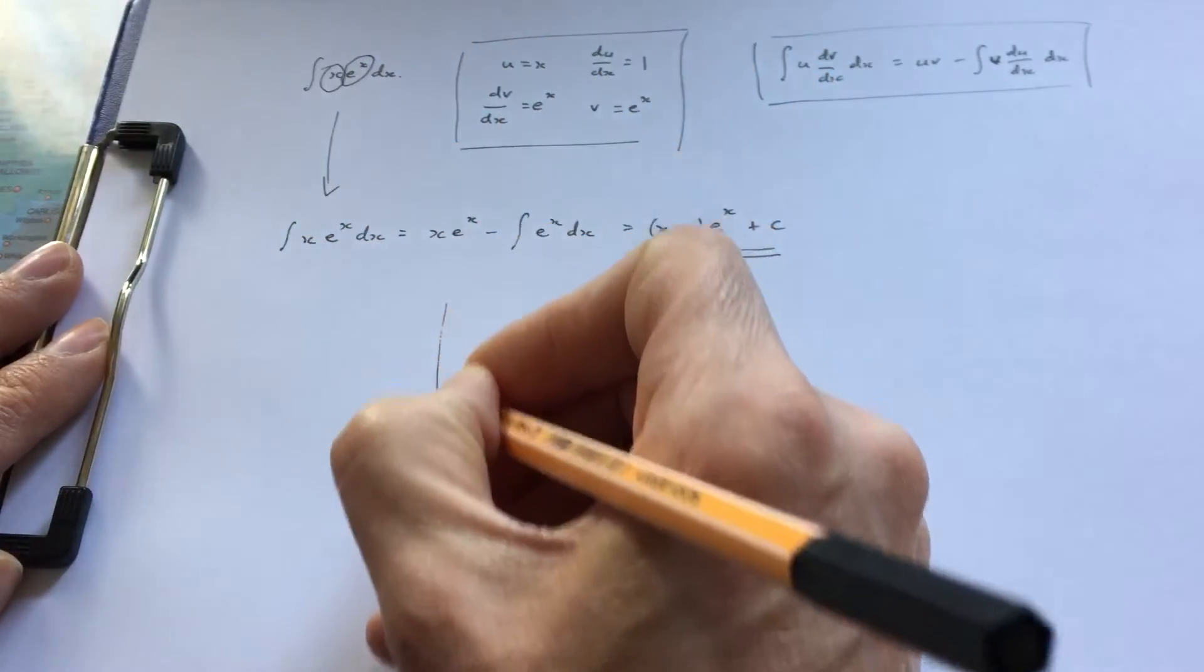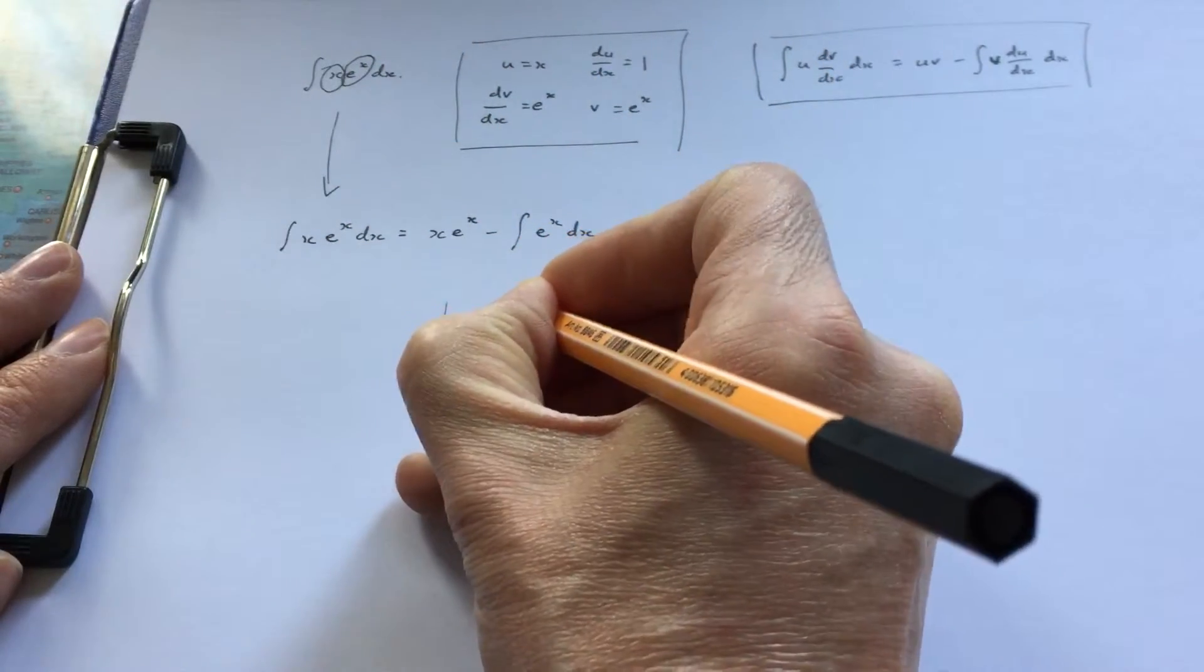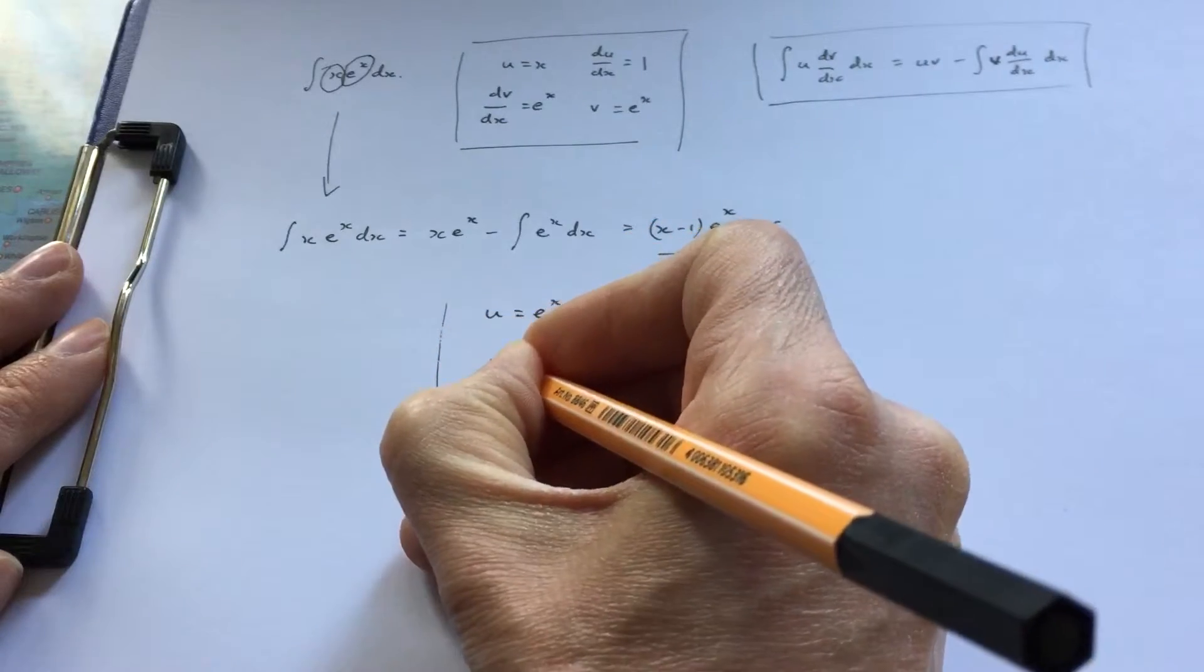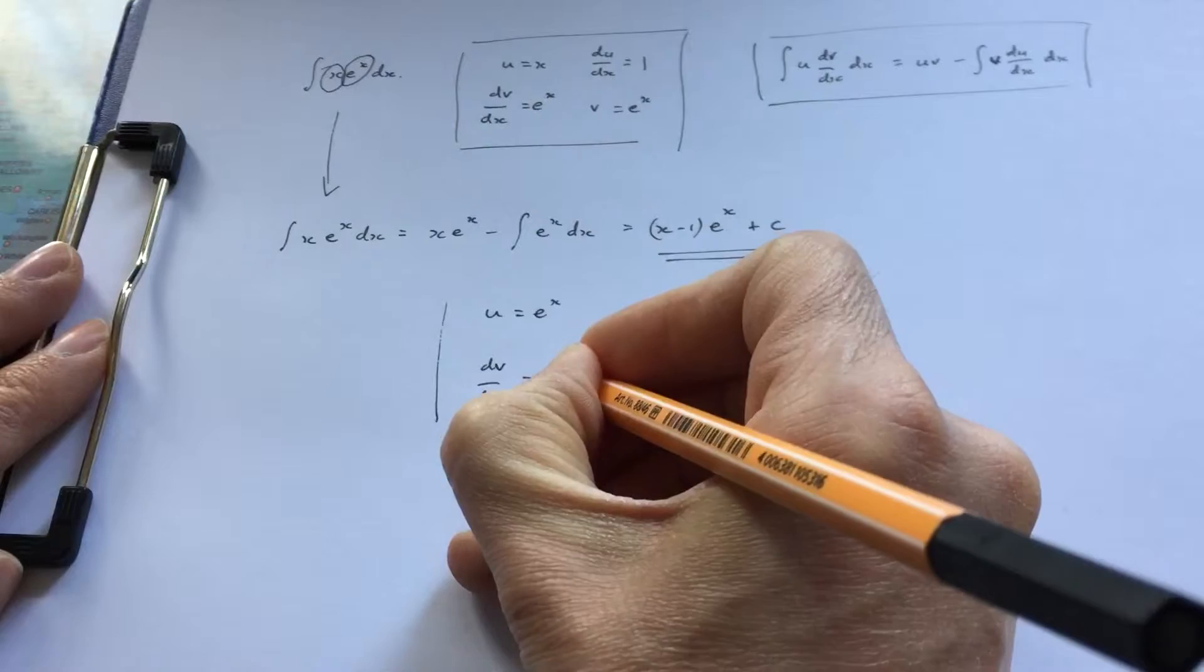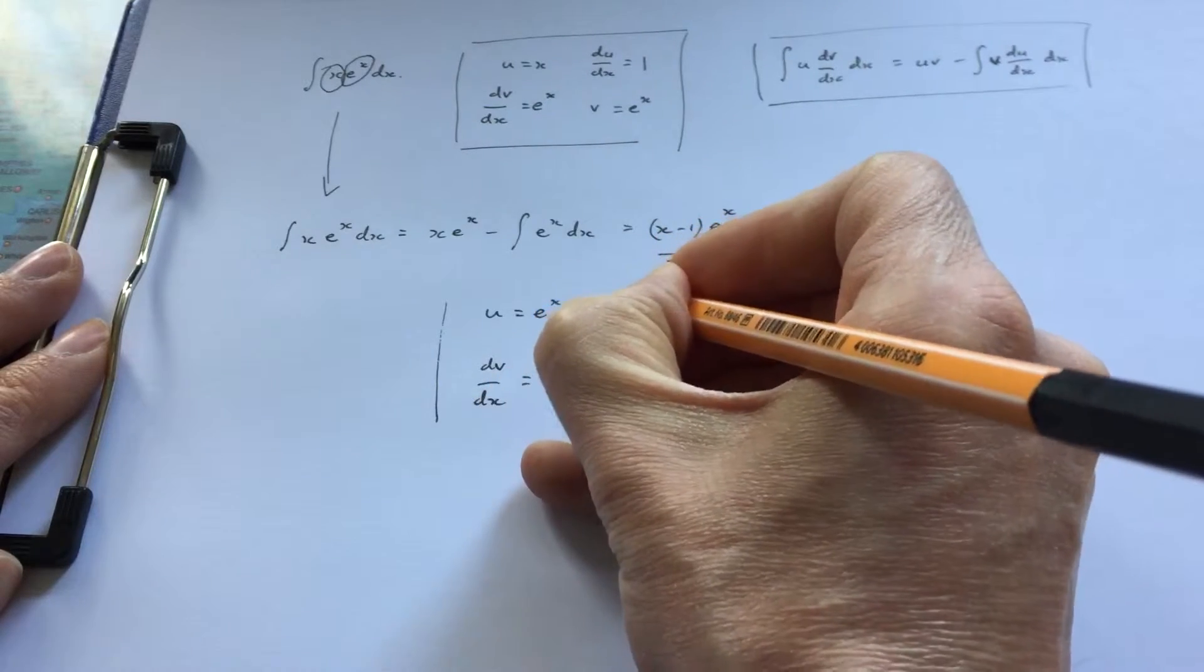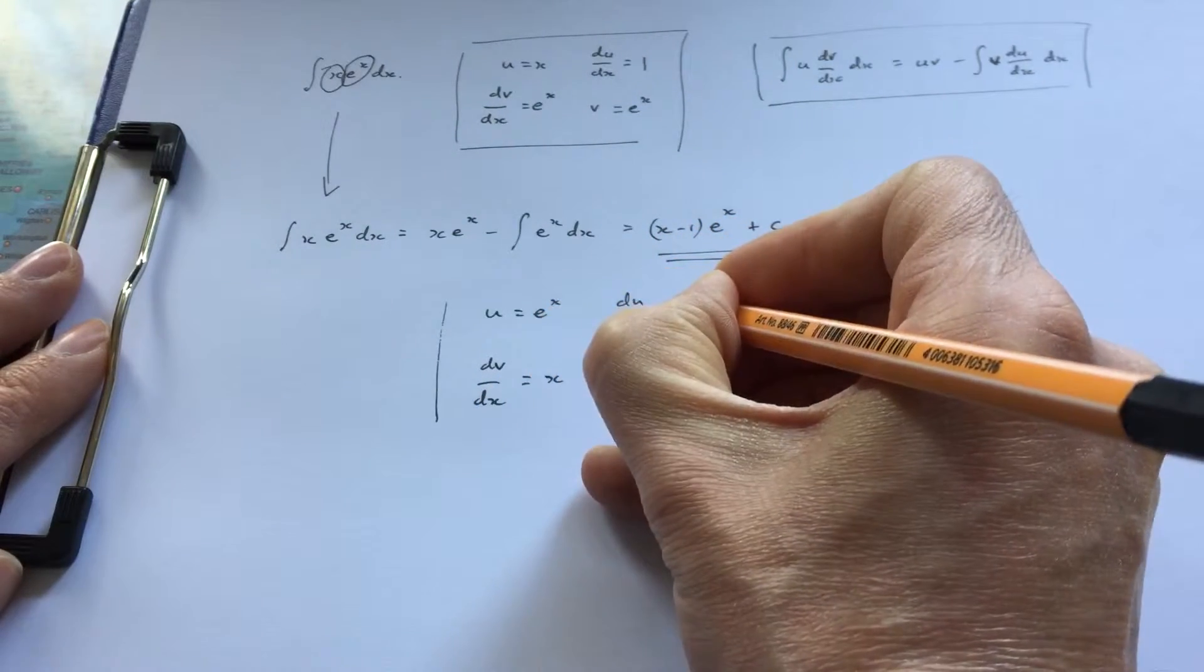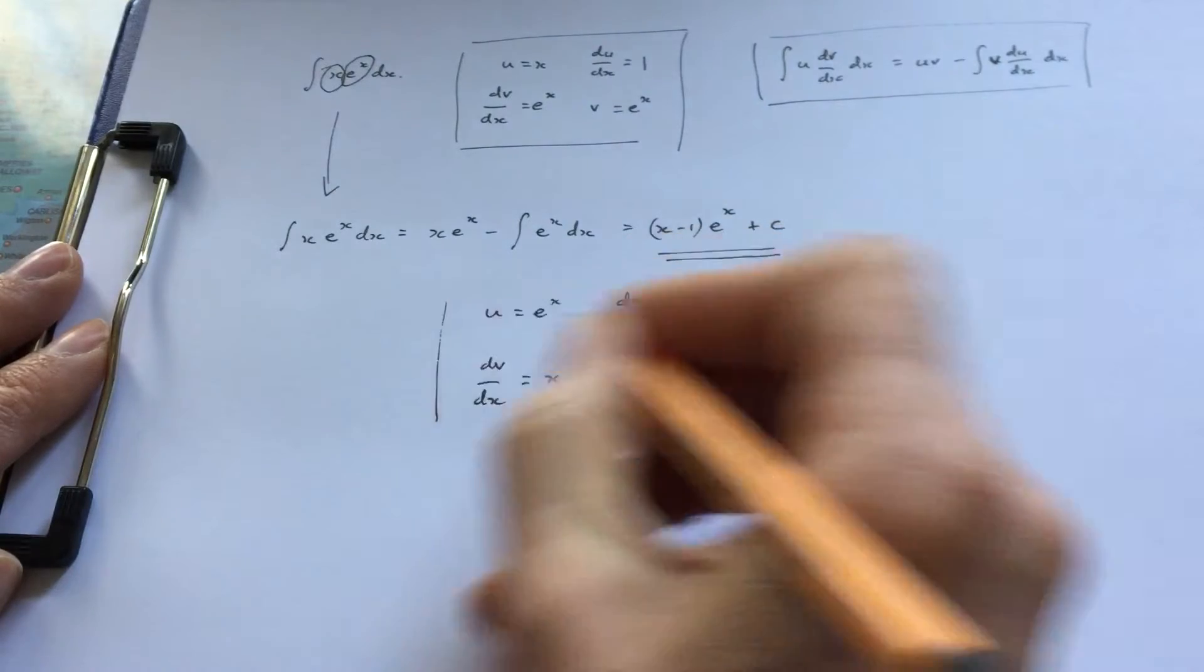We're now going to try u = e^x and dv/dx = x. Well, du/dx works out fine—that's just the differential of e^x.